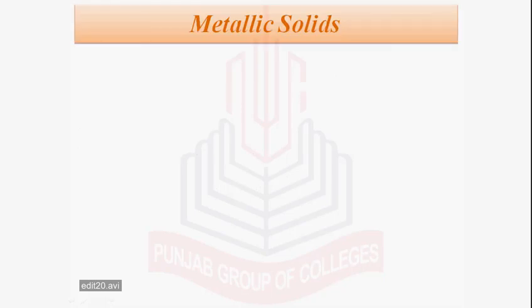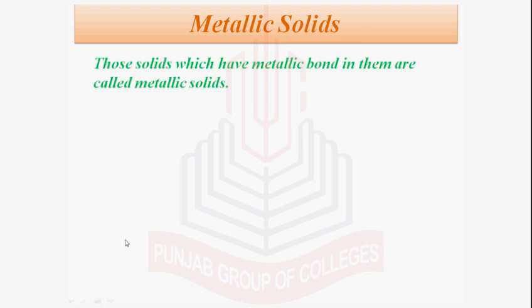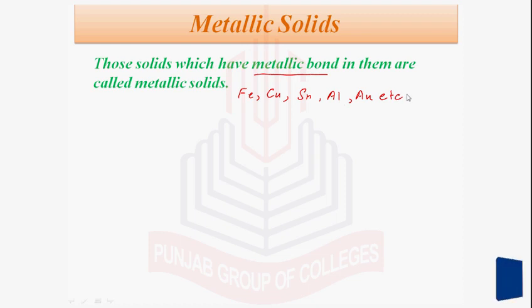The topic of discussion is metallic solids. These are solids which have a metallic bond in them, for example iron, copper, tin, aluminium, gold, etc. They are all metallic crystals, and it is believed that they all have metallic bonds in them.